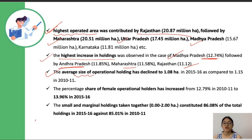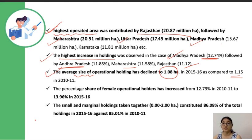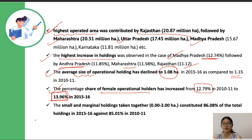The average size of Operational Holdings has declined to 1.08 hectares from 1.15 hectares in the last census. The percentage share of female Operational Holdings has also increased from 12.79% to 13.96% — so almost 14% of Operational Holdings are now female-operated. Remember this figure.